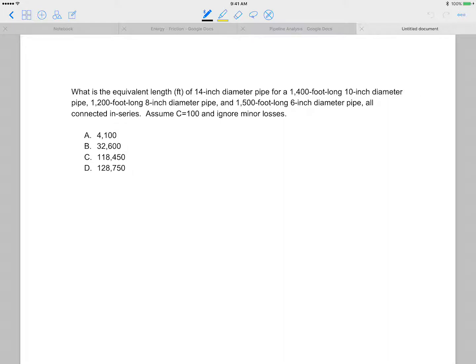This is an equivalent length problem. What is the equivalent length for a 14-inch diameter pipe that combines a 1,400 foot long 10-inch diameter pipe, 1,200 foot long 8-inch diameter pipe, and 1,500 foot long 6-inch diameter pipe, all connected in series? Assume C equals 100 and ignore minor losses.